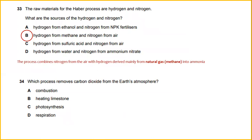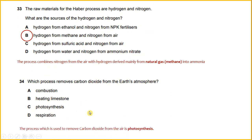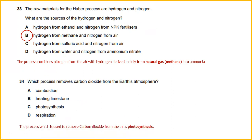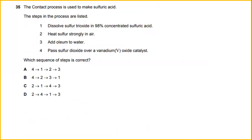Which process removes carbon dioxide from the Earth's atmosphere? Among the four options, the process used to remove carbon dioxide from the air is photosynthesis.